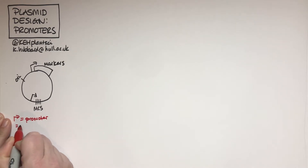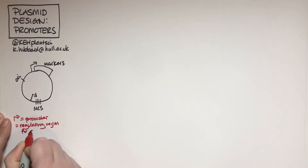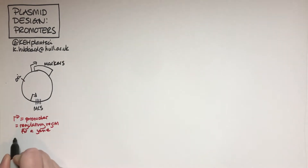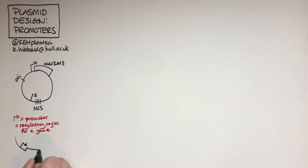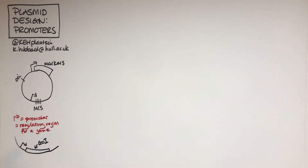The promoter is the regulatory region for a gene. The sequence of the promoter determines whether that gene is going to be able to be switched on or off. That's what those little arrows mean on my diagram. This can be quite important when you're cloning - if I clone my gene into the multiple cloning site, I've got a promoter there, and that's going to determine whether it's going to be transcribed. Promoters work at the level of transcription.